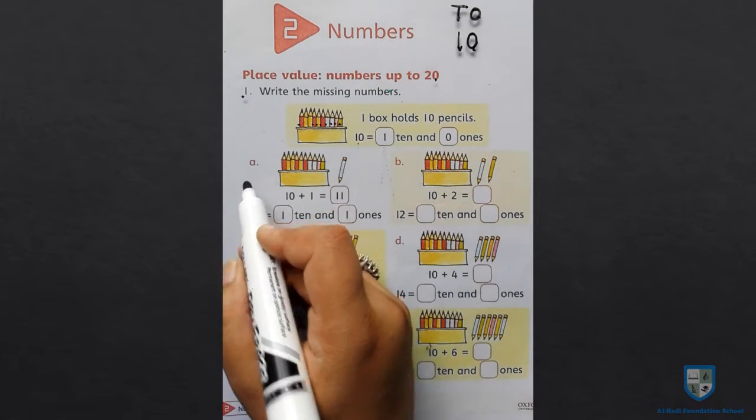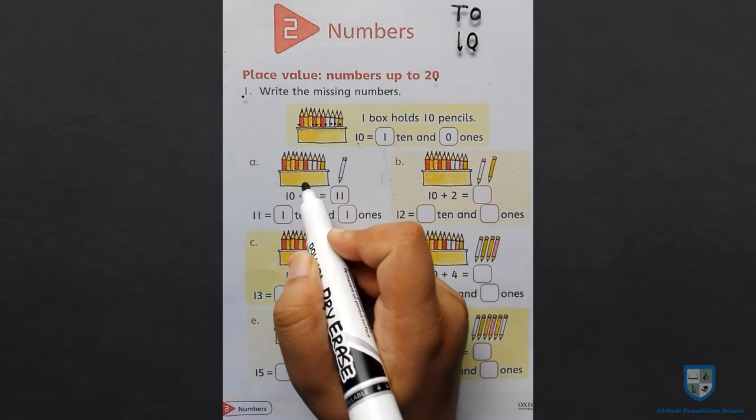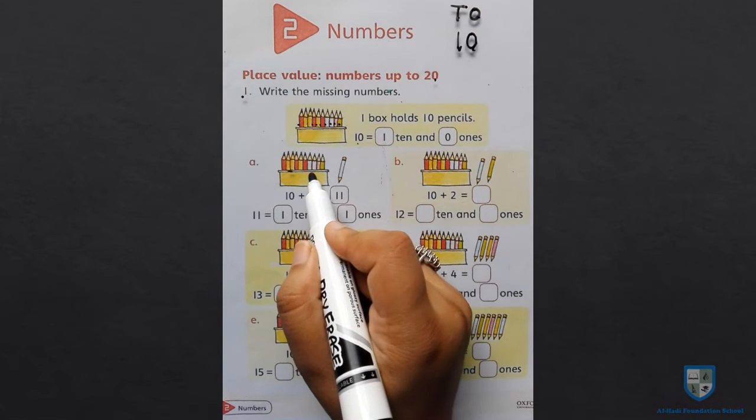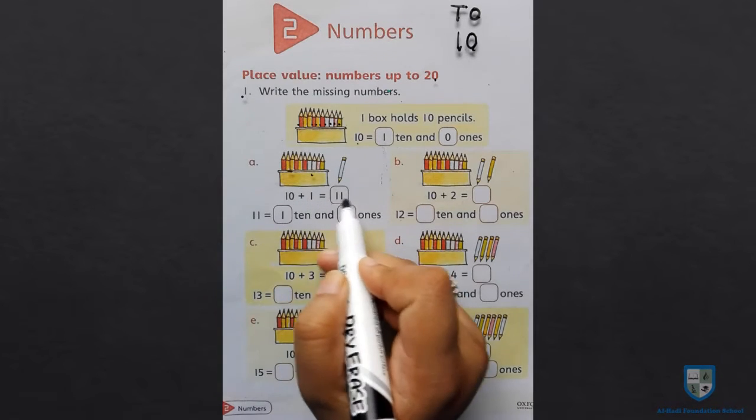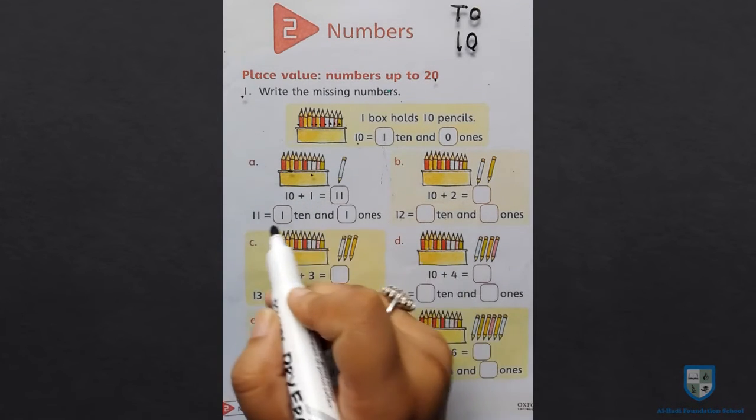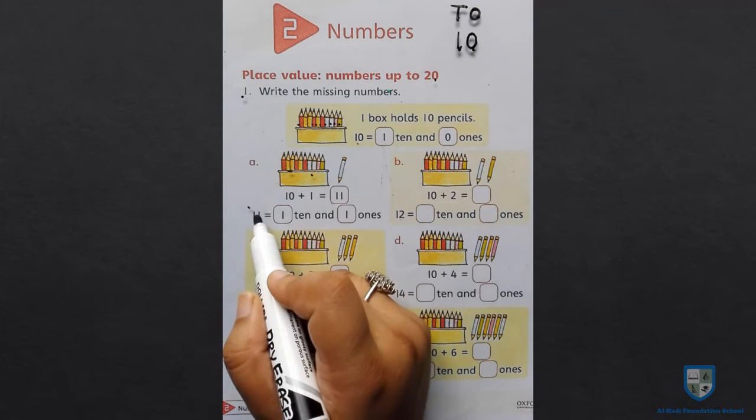In the box there are 10 pencils. We have to join 10 pencils. 10 plus 1 is equal to 11. In the first number is 10 and the second number is 1s. 1 ten and 1 one is equal to 11.